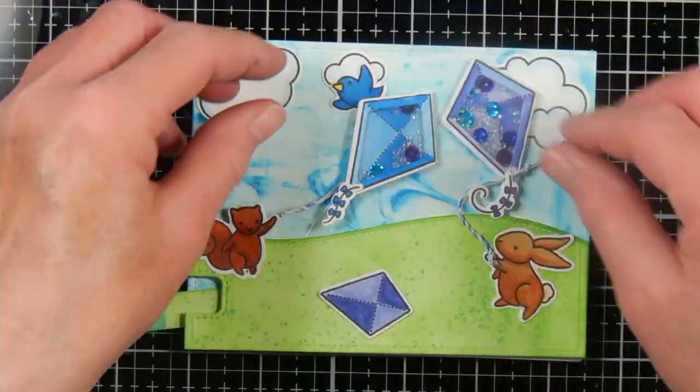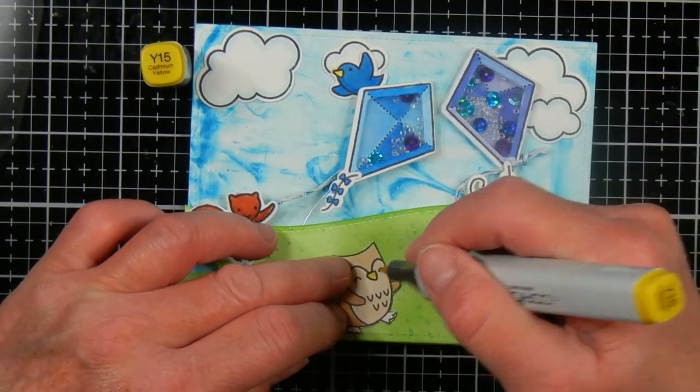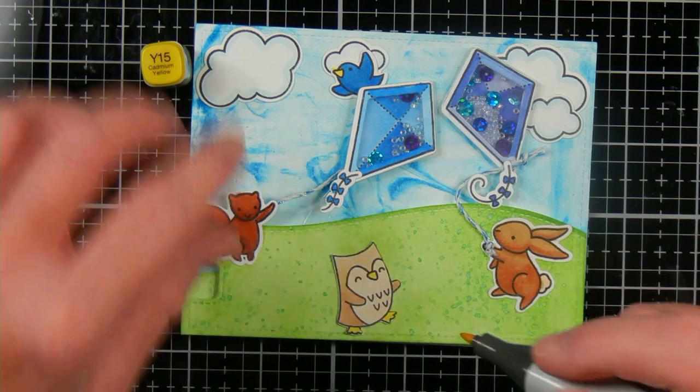I noticed that I forgot to color in the beak and feet of the owl, so I just got out my Y15 Copic marker to color that in.